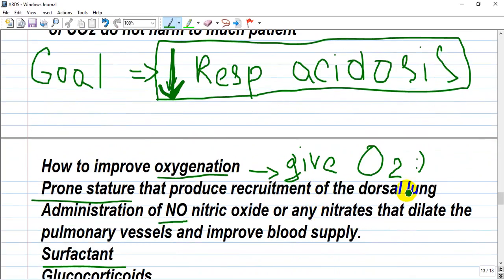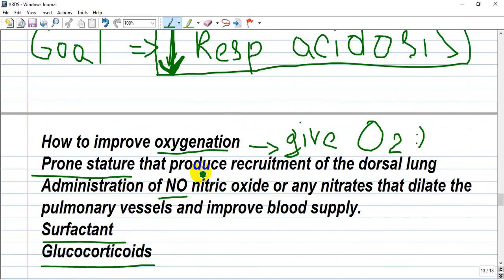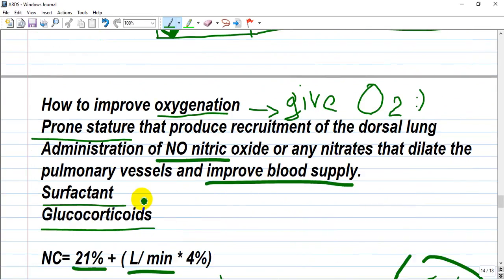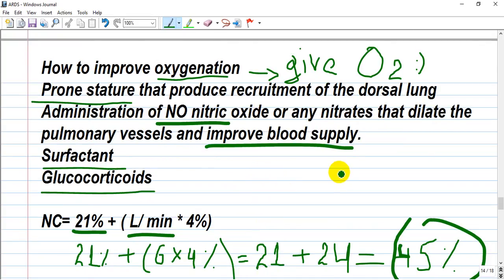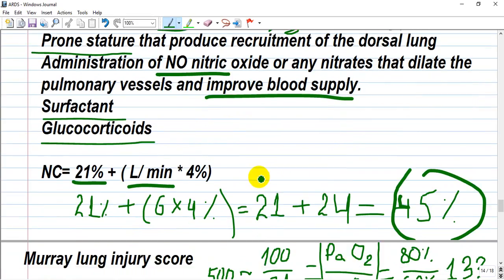How to improve oxygenation? Prone posture that produces recruitment of the dorsal lungs and administration of nitric oxide or any analog nitrates that dilate the pulmonary vessels and improve blood supply at least. Surfactant and glucocorticoids. We also can give medications that make some muscle relaxation.